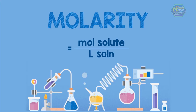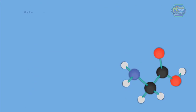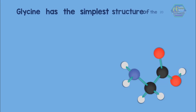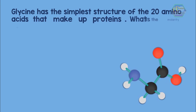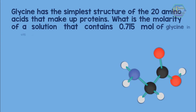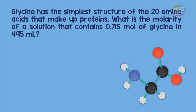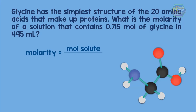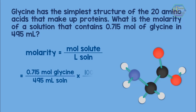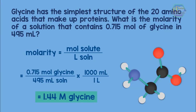Let us try some problems. Glycine has the simplest structure of the 20 amino acids that make up proteins. What is the molarity of a solution that contains 0.715 mol of glycine in 495 milliliters? Recall that molarity is the number of moles of solute in each liter of solution. We divide the number of moles by the volume and convert the volume to liters to find the molarity. So the concentration is 1.44 M glycine.